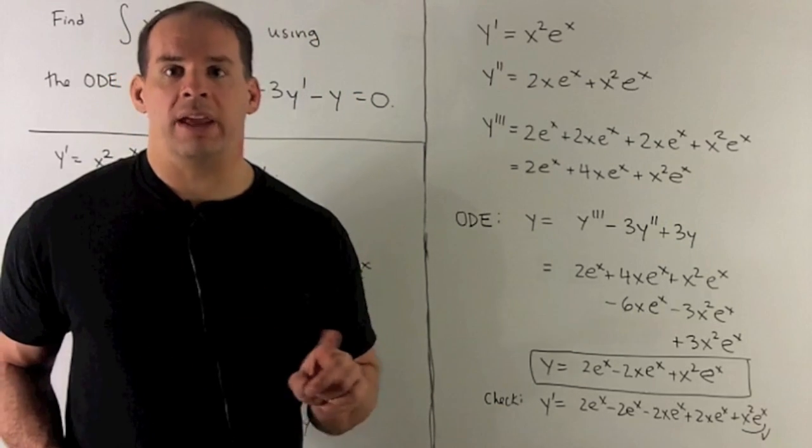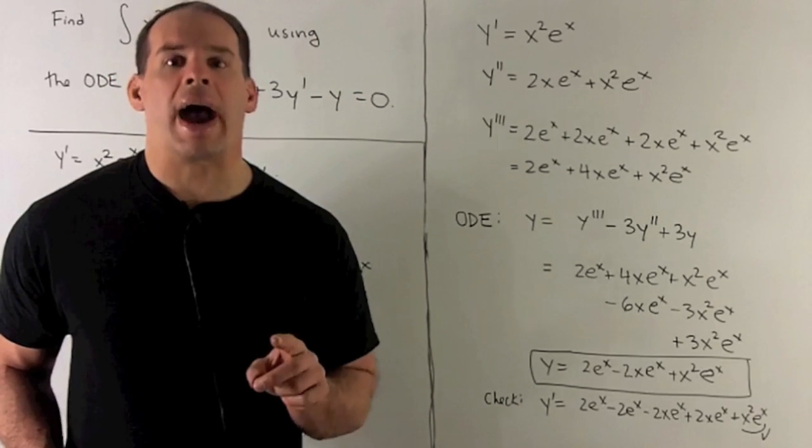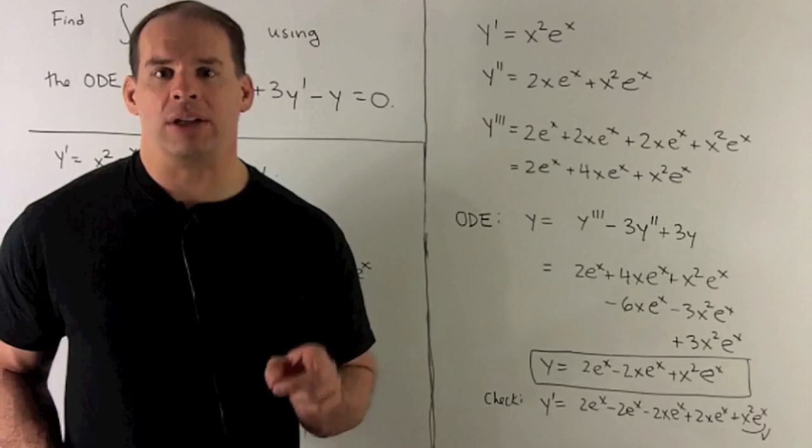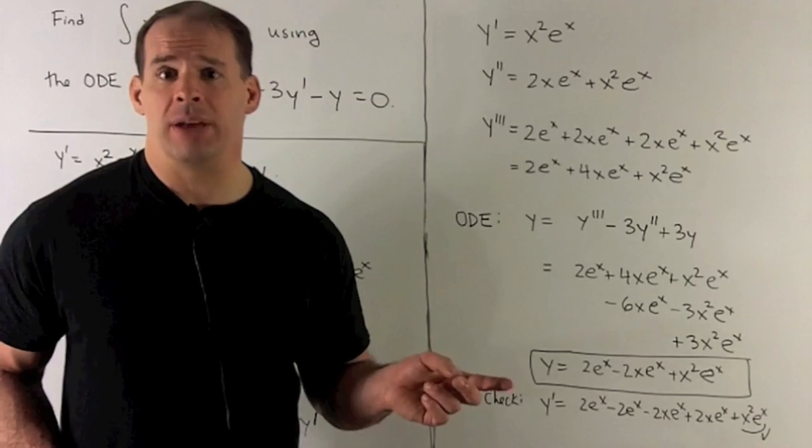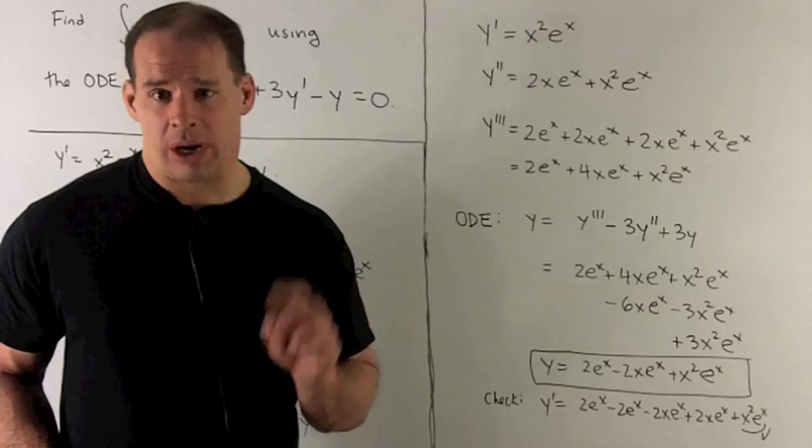Now we look at our ODE, the only thing that's missing is y. But since I have y prime, y double prime, and y triple prime, we substitute in and whatever's left over will be our y.